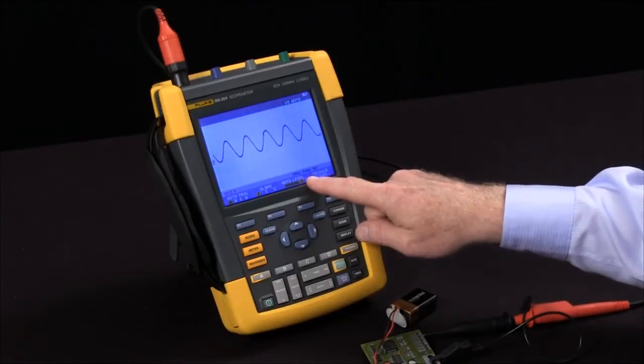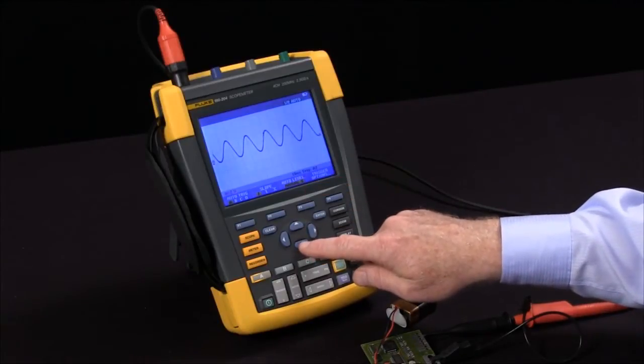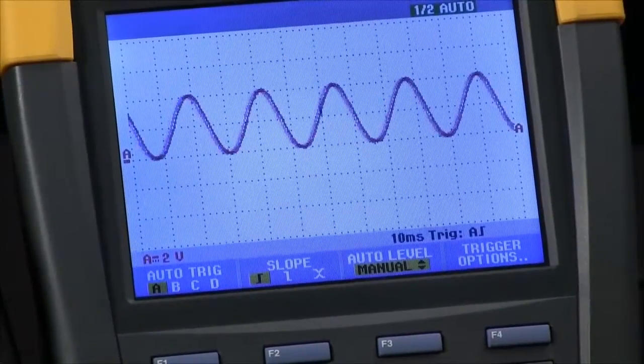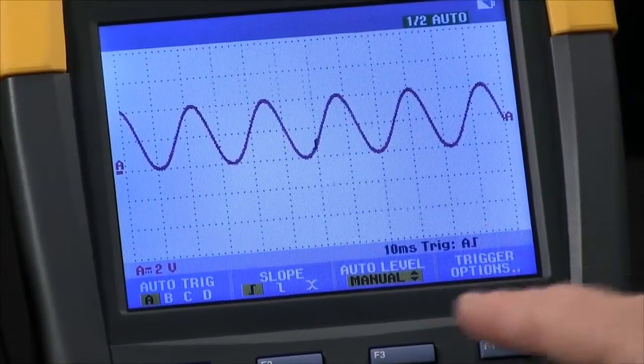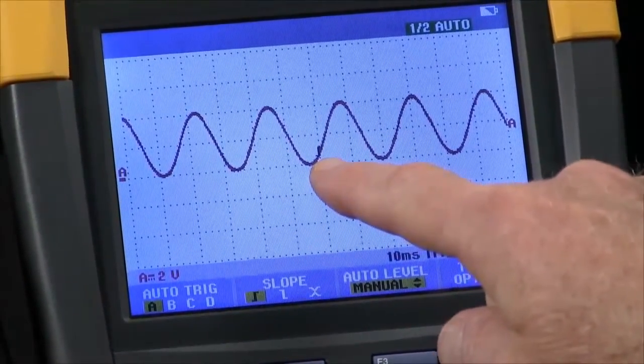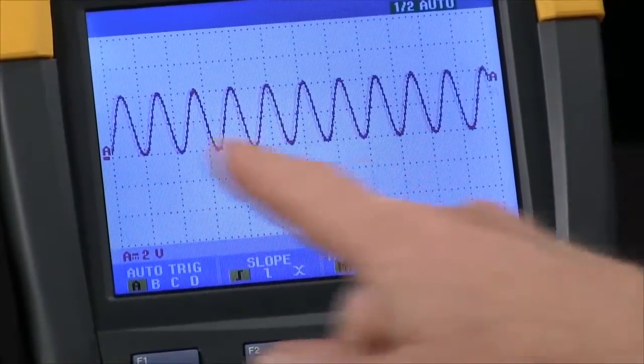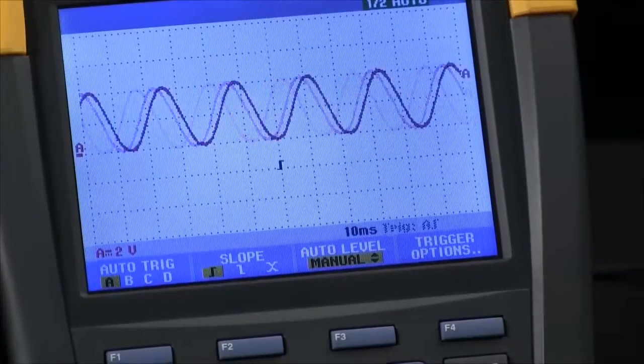If I use my arrow keys to reduce that level, you'll note that the waveform shifts a little bit left and right. I'm now triggering near the bottom of the waveform. If I come outside of the waveform, I'll lose sync and things will no longer be stable.